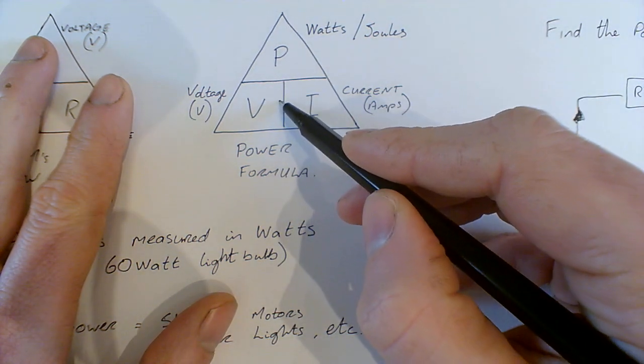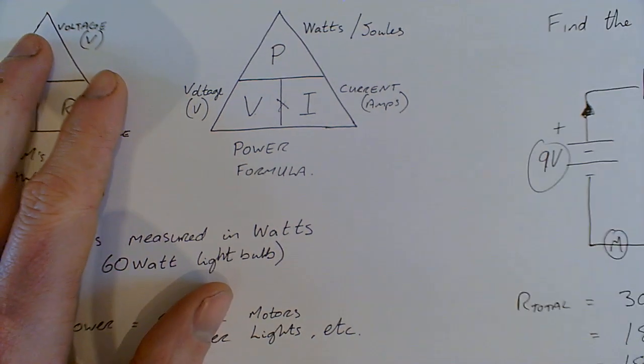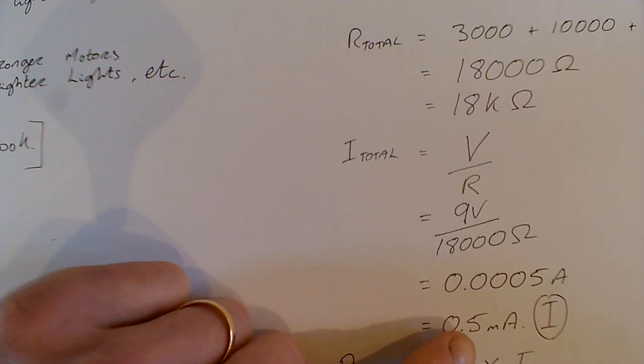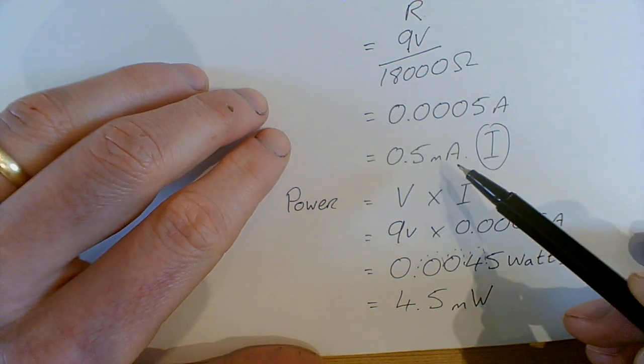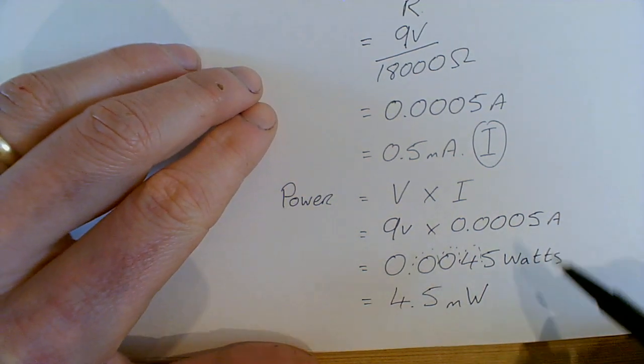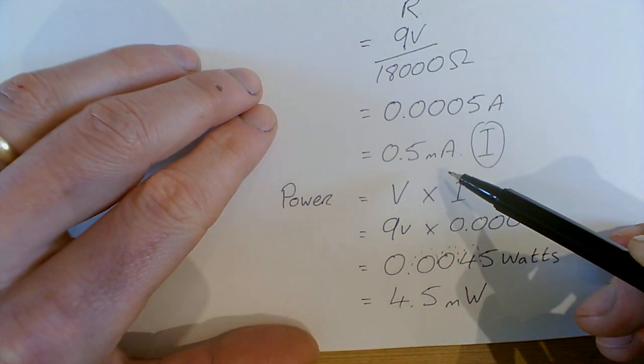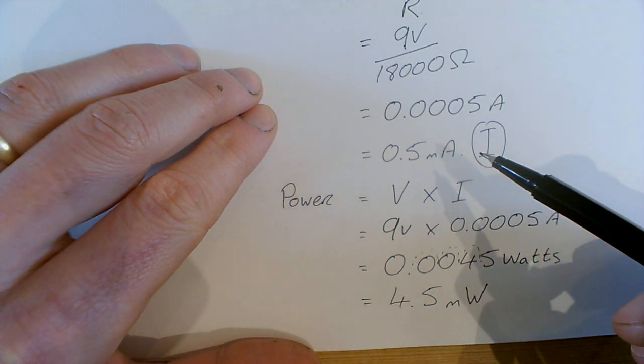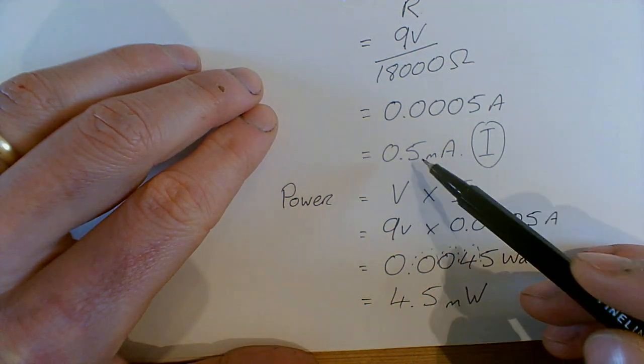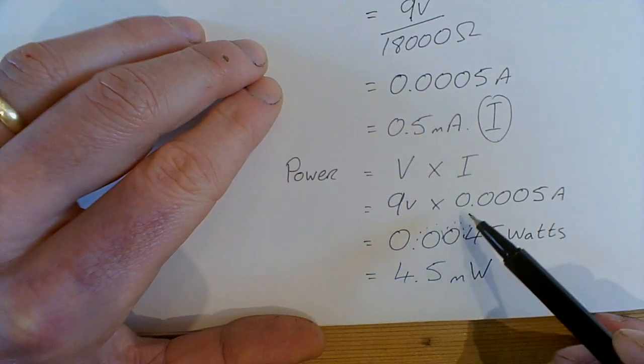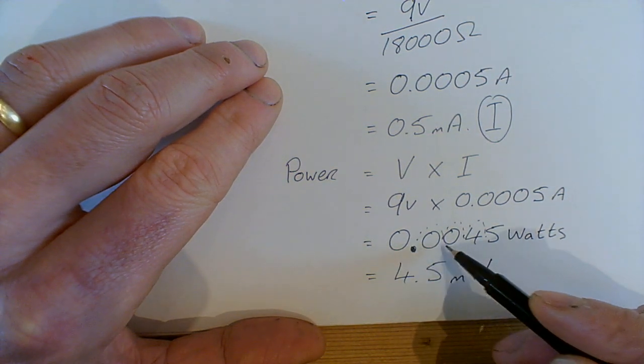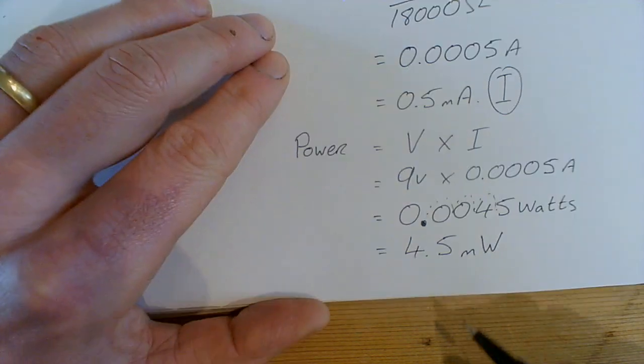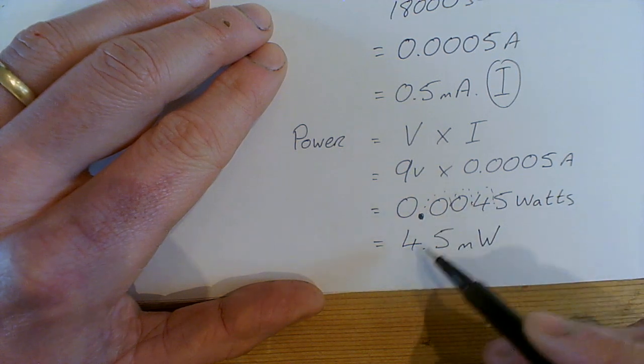Now we've got our current, we've got our I, and we've got our V. If we want to find our power, it's voltage multiplied by current: 9 volts multiplied by 0.5 milliamps. When we're doing all our formulas, you have to bring them to amps, full amps and full volts and full ohms. So it's 9 volts multiplied by 0.0005 amps, which equals 0.00045 watts or 4.5 milliwatts.